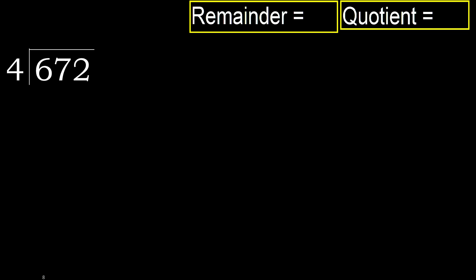672 divided by 4. 6 is not less, so we work with 6. 4 multiplied by which number is nearest to 6 but not greater? 4 multiplied by 2 is 8 — that is greater. Multiply by 1 is 4, which is not greater. Subtract: 6 minus 4 is 2.